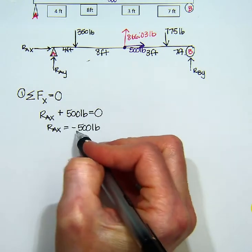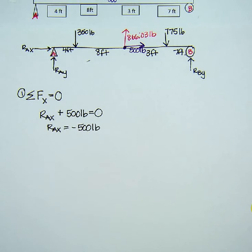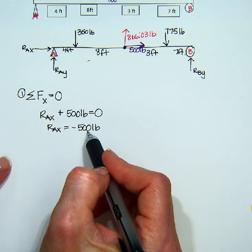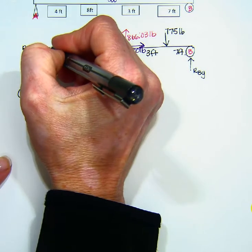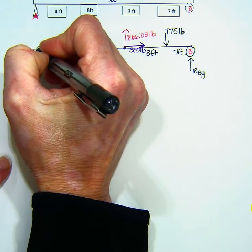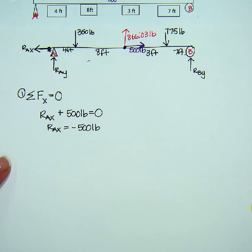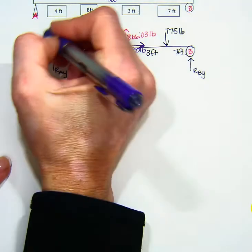And all this negative means is when I drew my picture, I drew the arrow facing towards it. And so I have negative 500 pounds, so that means my arrow was drawn the wrong way. It's really going this way, my reaction force is pulling away with 500 pounds of force.